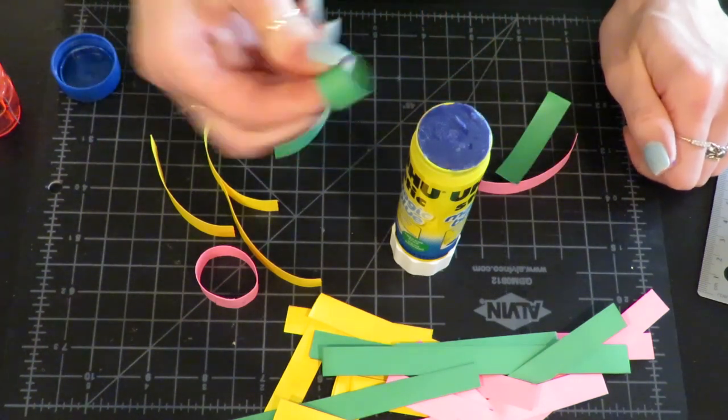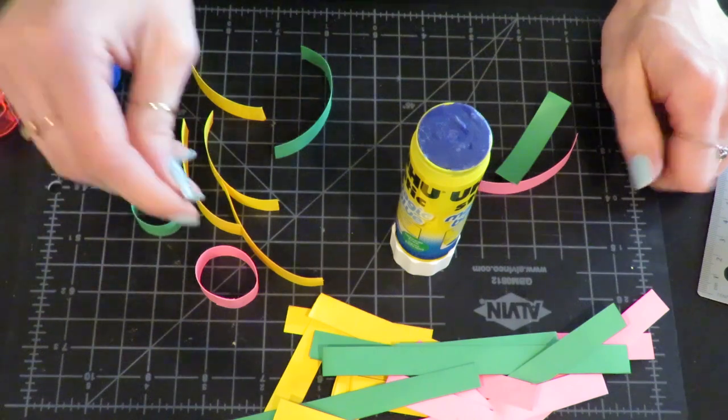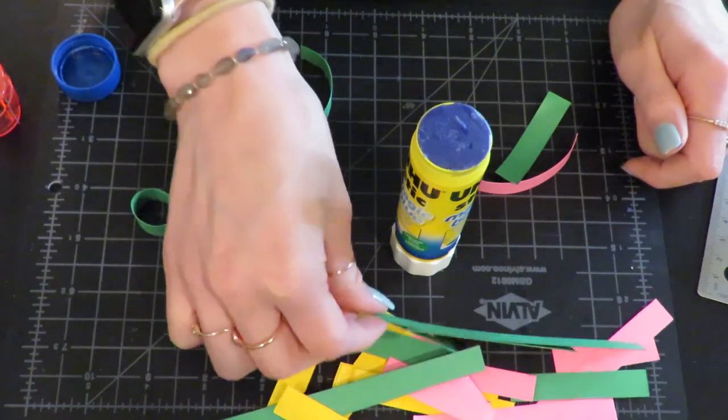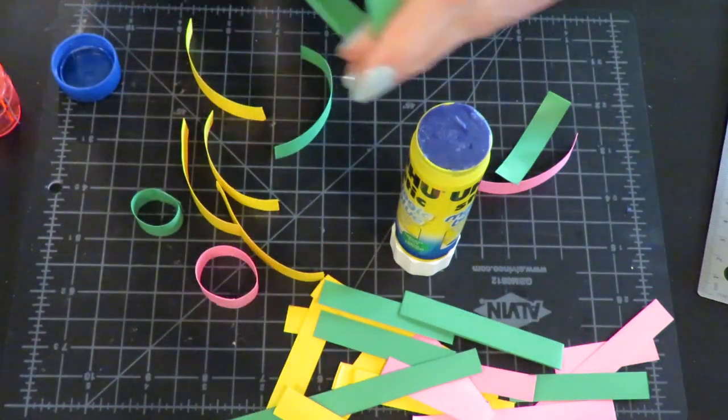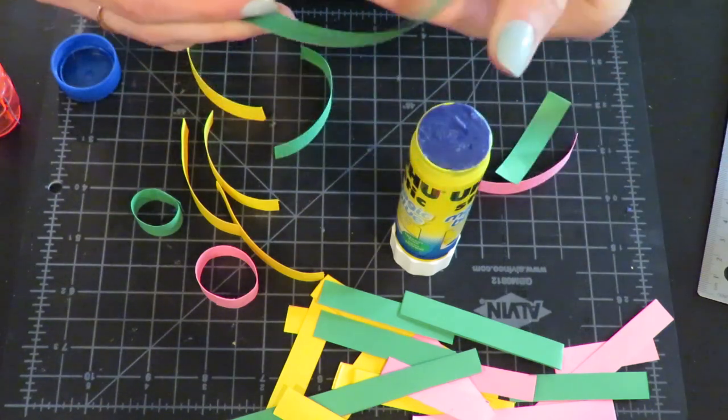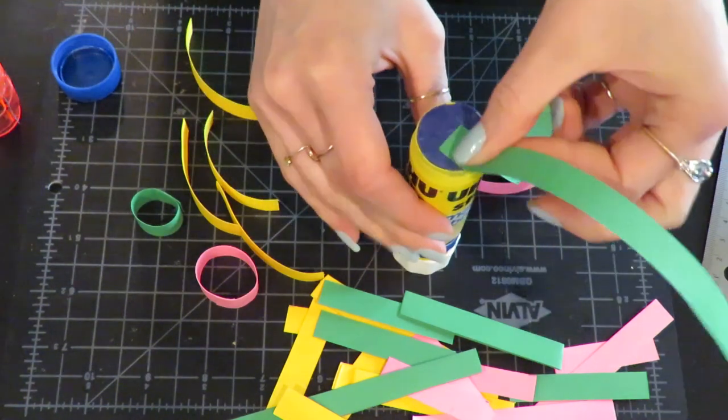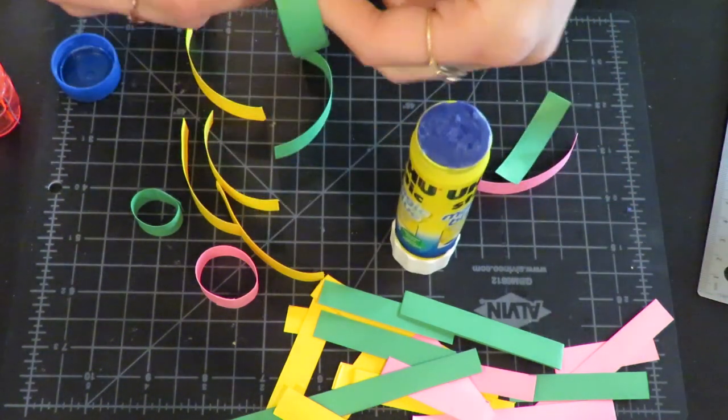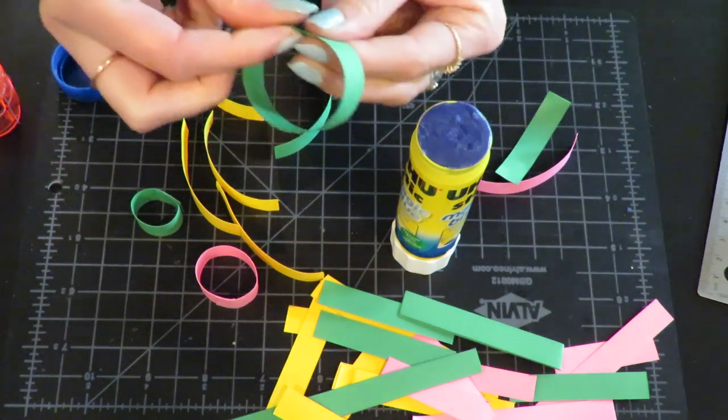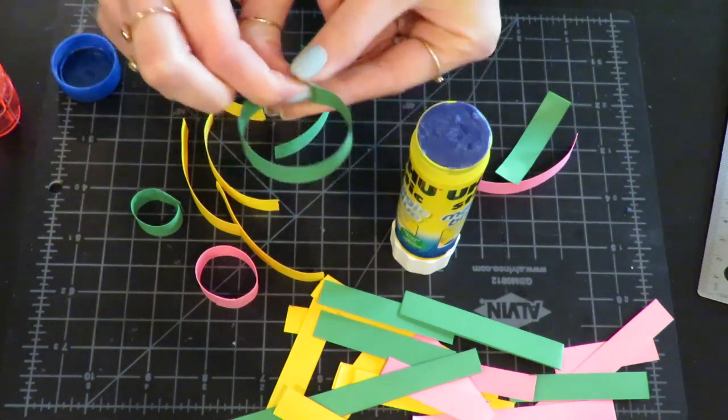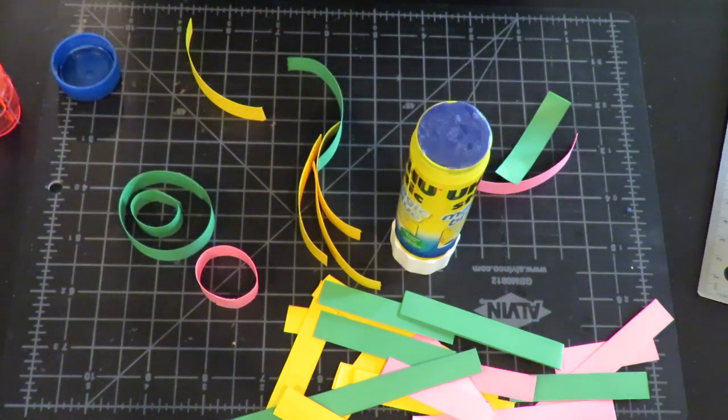You can see this is a shorter piece, so I've made a little bit smaller loop versus a longer piece like this one. If I give it a little bit of pre-curl, it's going to make a much larger loop.